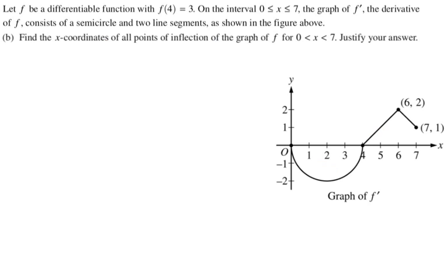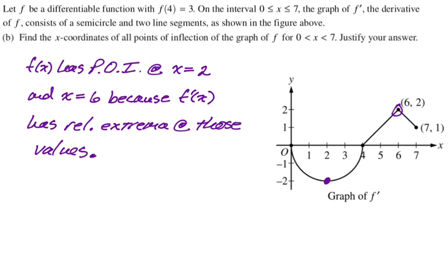Alright, let's take a look at part b. Find the x coordinates of all points of inflection of the graph of f on 0 to 7 and justify your answer. So this is the graph of f prime that we are shown, which means all of the places that f prime goes from increasing to decreasing or decreasing to increasing are the points of inflection. So at x equals 2 and at x equals 6. I'm going to use a slightly different justification, though, because I prefer to use this. So I'm going to say f of x has point of inflection at x equals 2 and x equals 6. My reasoning is going to be because f prime has relative extrema at those values.